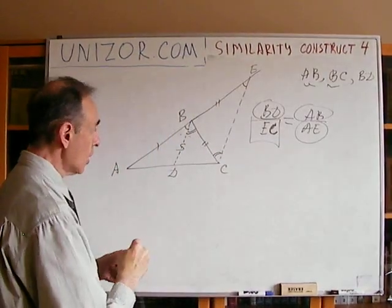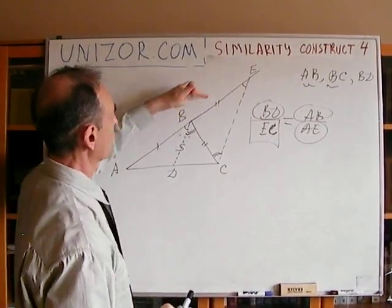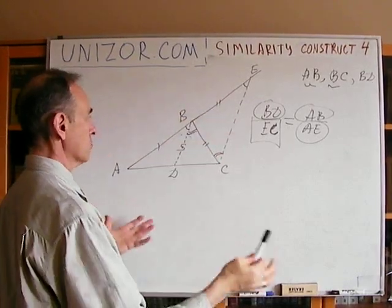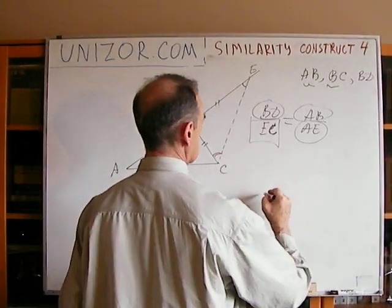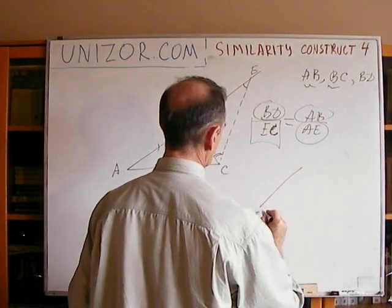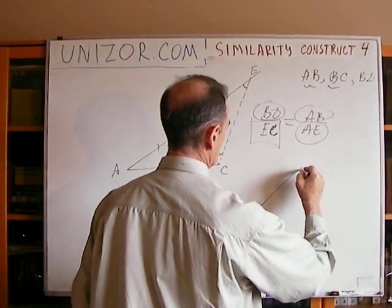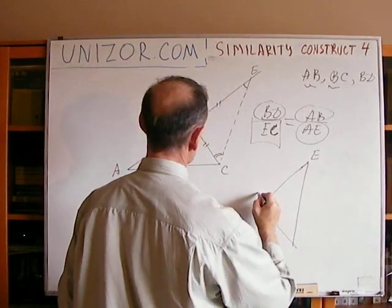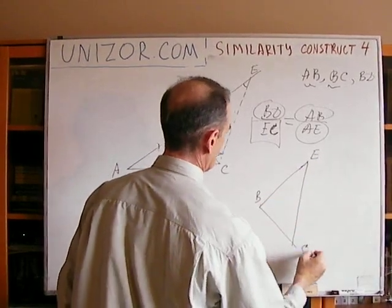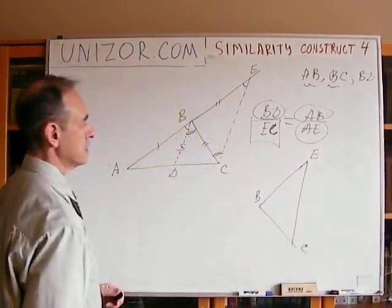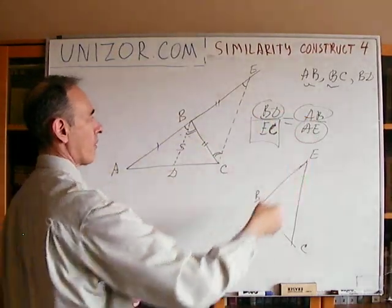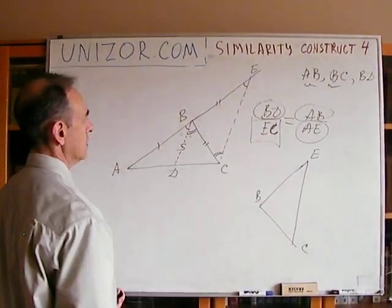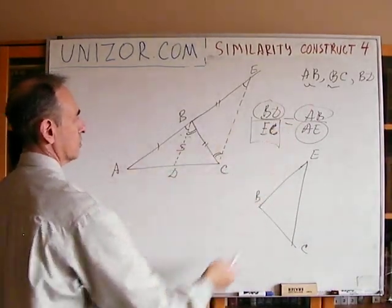With EC known, consider triangle BEC. We know all three sides, so we can build triangle BEC — and that's how we start our construction. Construction starts from triangle BEC after properly finding EC from this proportion.